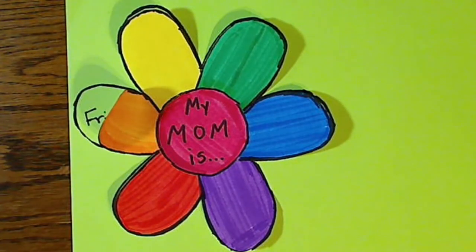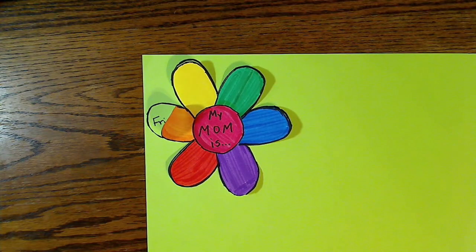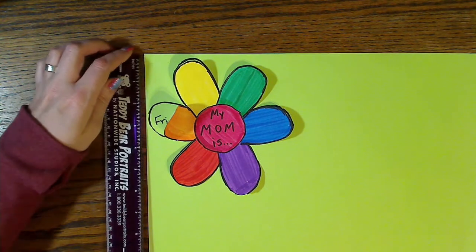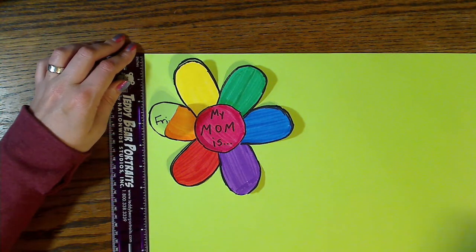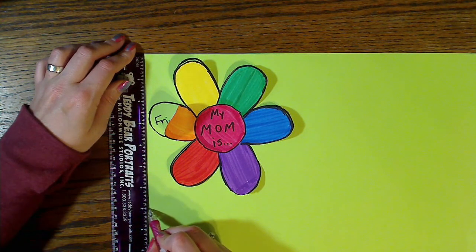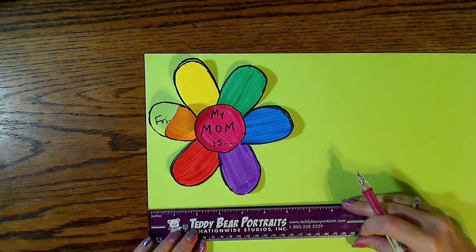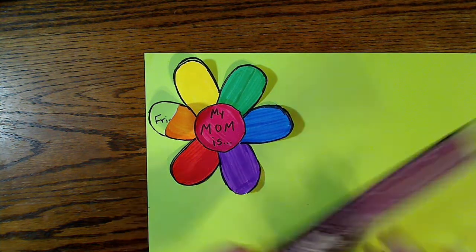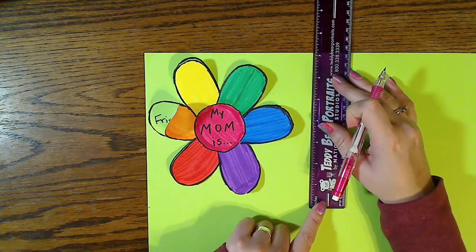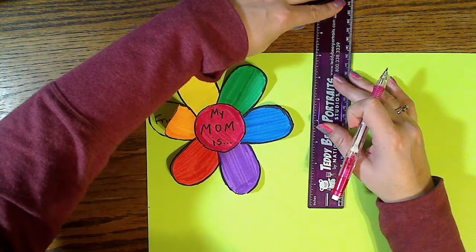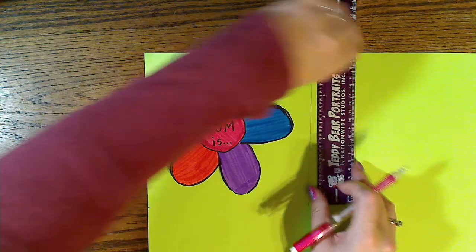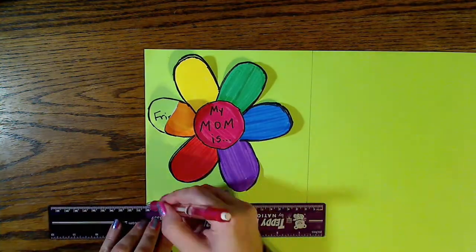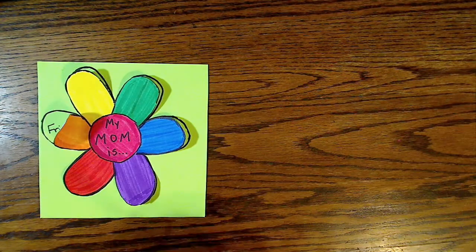The very last step to this project is just going to be cutting my construction paper smaller, simply because I have big, huge construction paper. I finally found my big ruler, guys. I'm super excited about this. So seven inches by seven inches. Here we go.